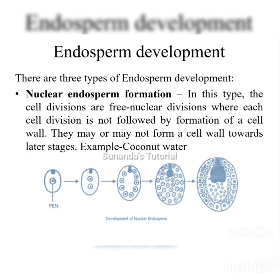According to their developmental pattern, endosperms can be categorized into three types: nuclear endosperm formation, cellular endosperm formation, and helobial endosperm formation.